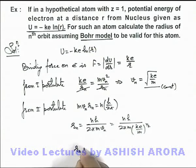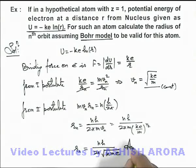On further simplifying, the radius of the electron in the nth orbit can be given as nh/(2π√(kme)). That is the answer to this problem.